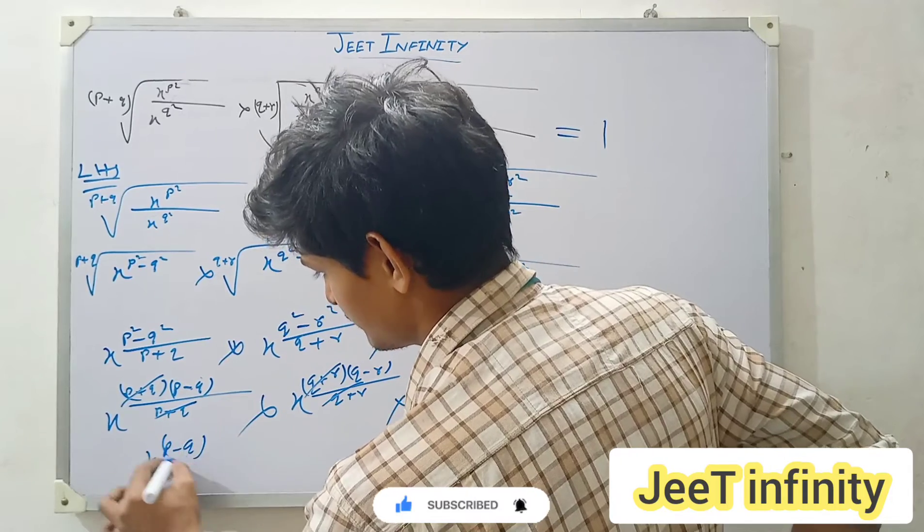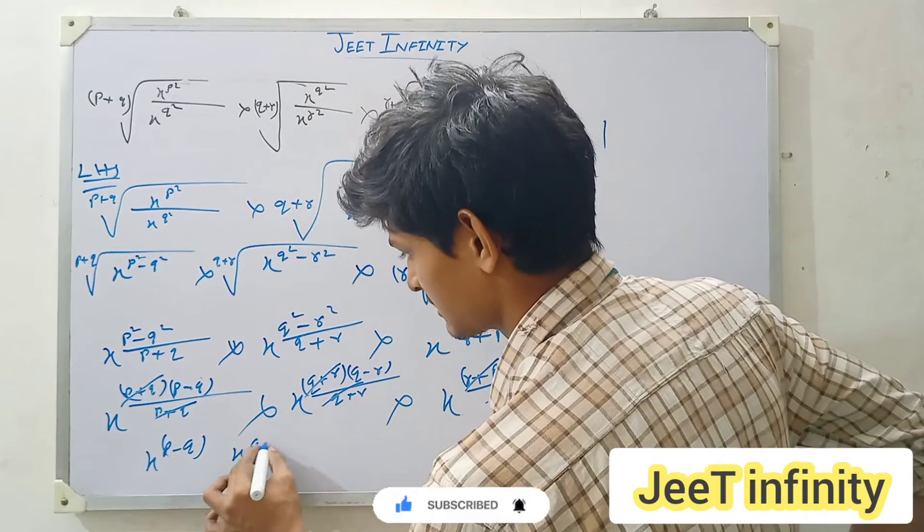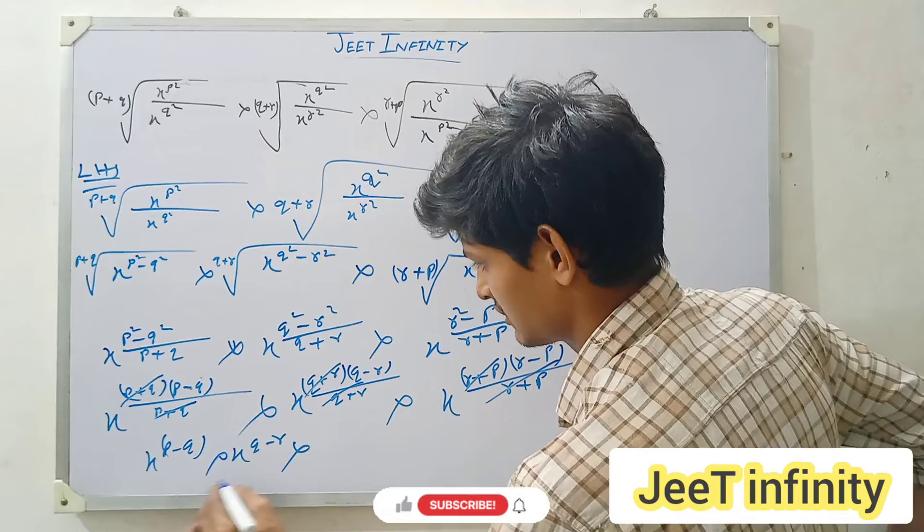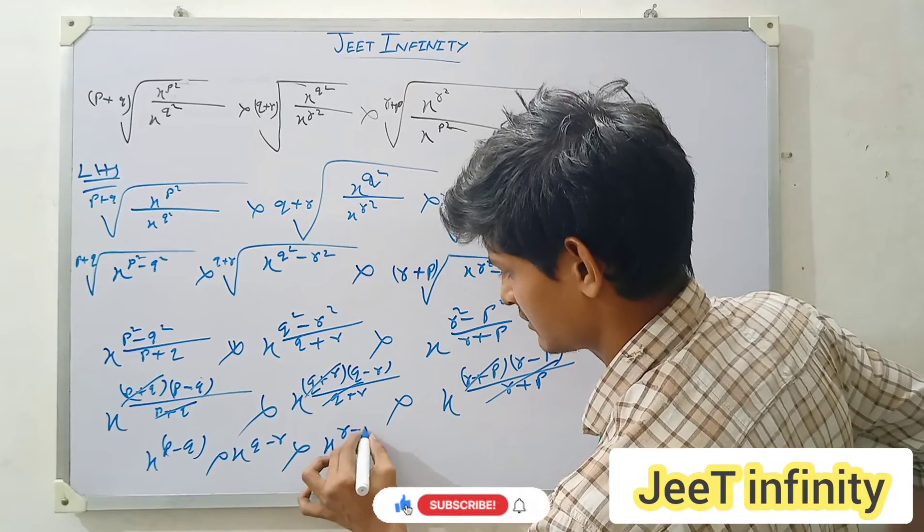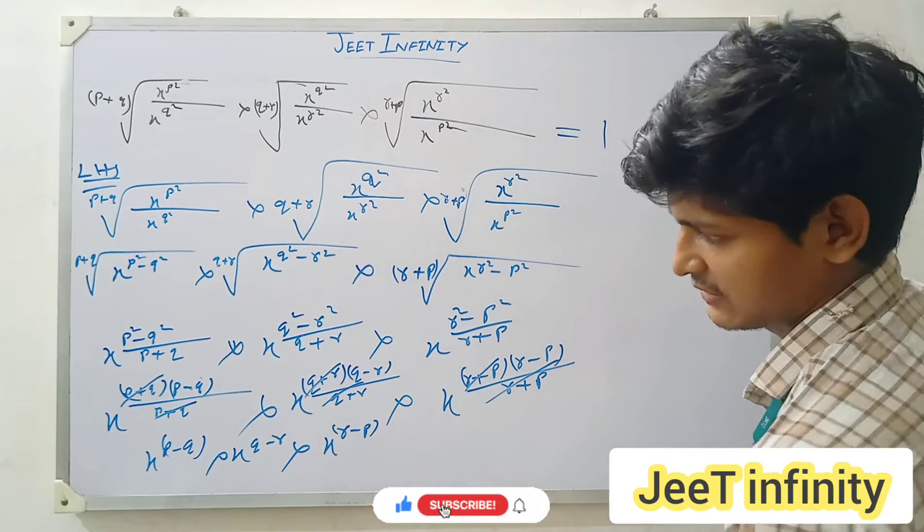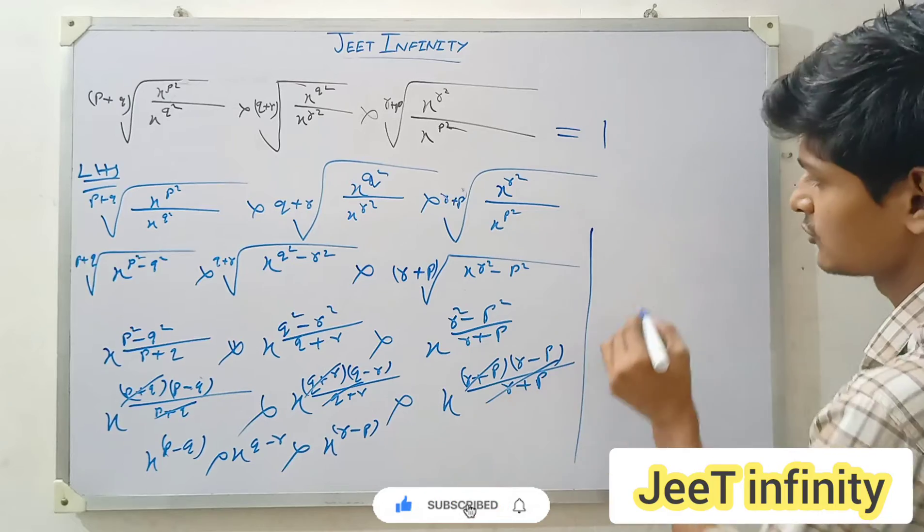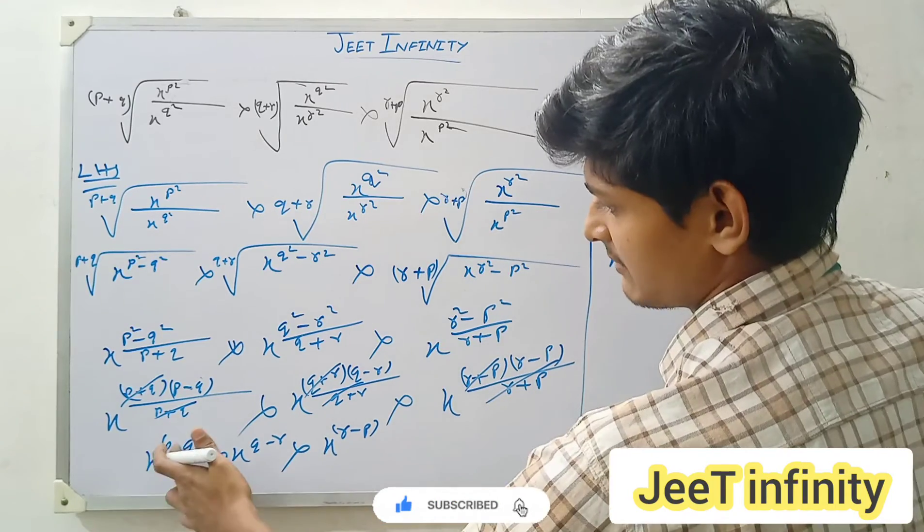x to the power (r minus p). And here what remains in the denominator? x to the power (p minus q), x to the power (q minus r), and x to the power (r minus p).